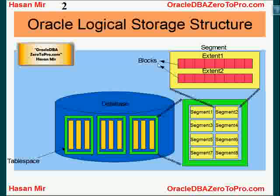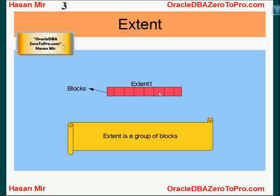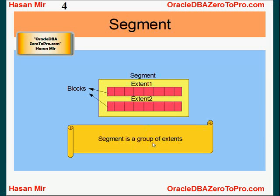Now we need to take a look at extents and segments from a different perspective. And after this tutorial, I'll give you the take-home. We already know that an extent consists of blocks. The number of bytes a block has has to be in multiples of the number of operating system bytes — we talked about all that in the last tutorial. Extent is a group of blocks and segment is a group of extents.